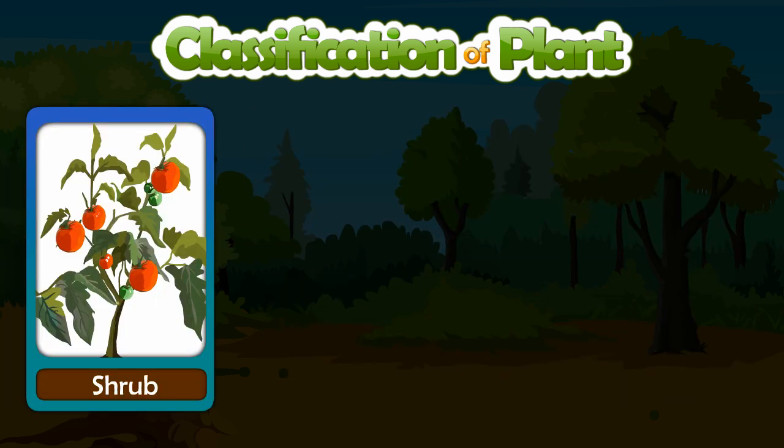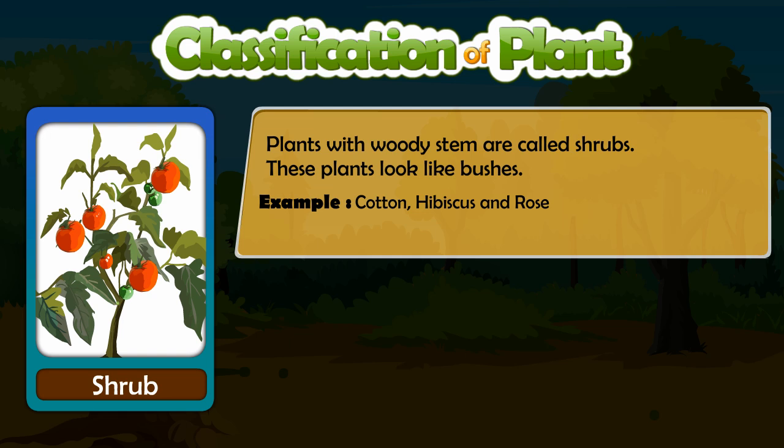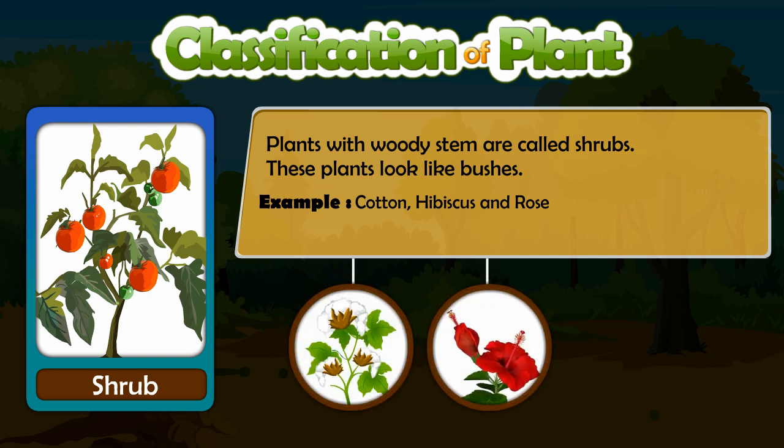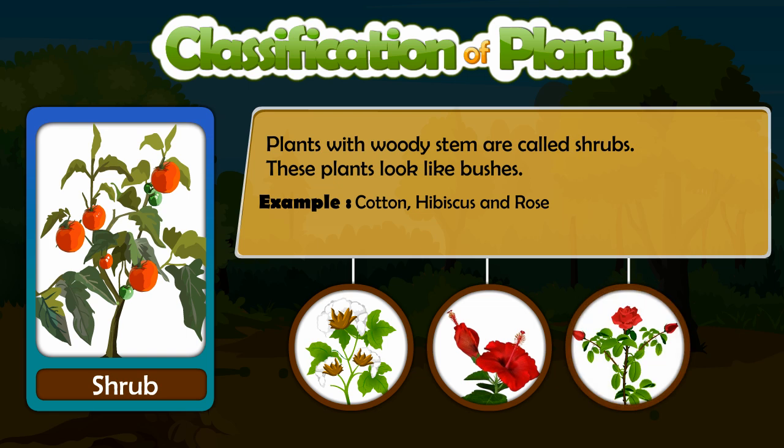Plants with woody stem are called shrubs. These plants look like bushes. Examples of shrubs: Cotton, Hibiscus and Rose.